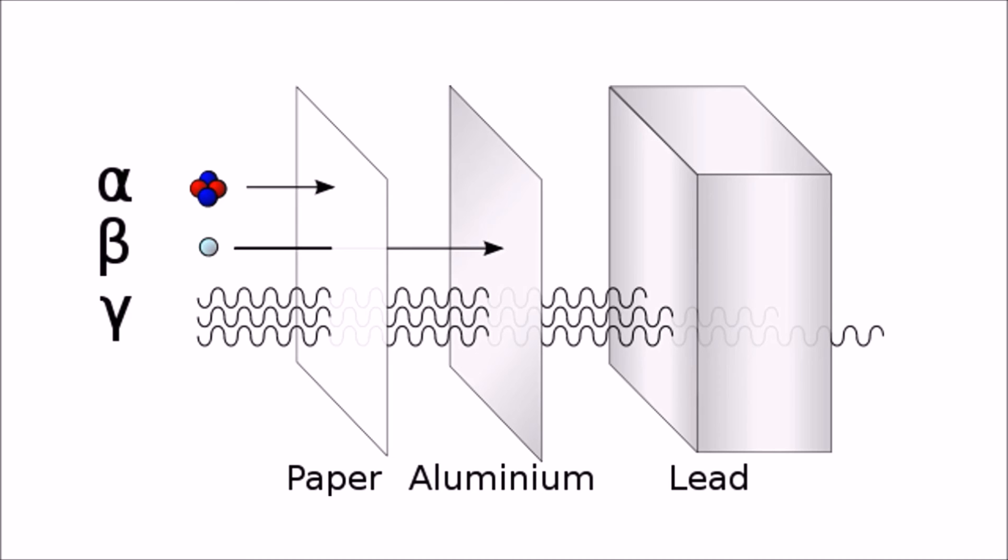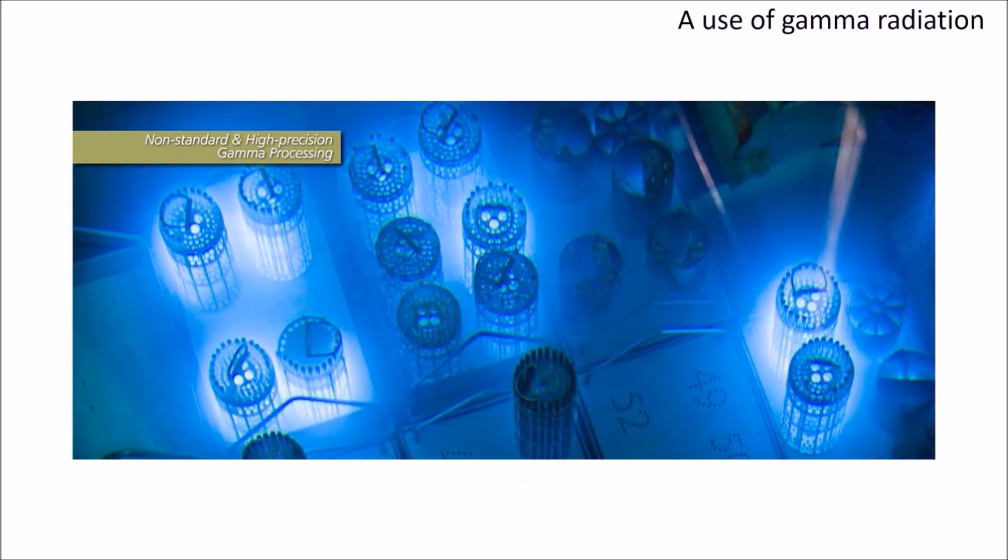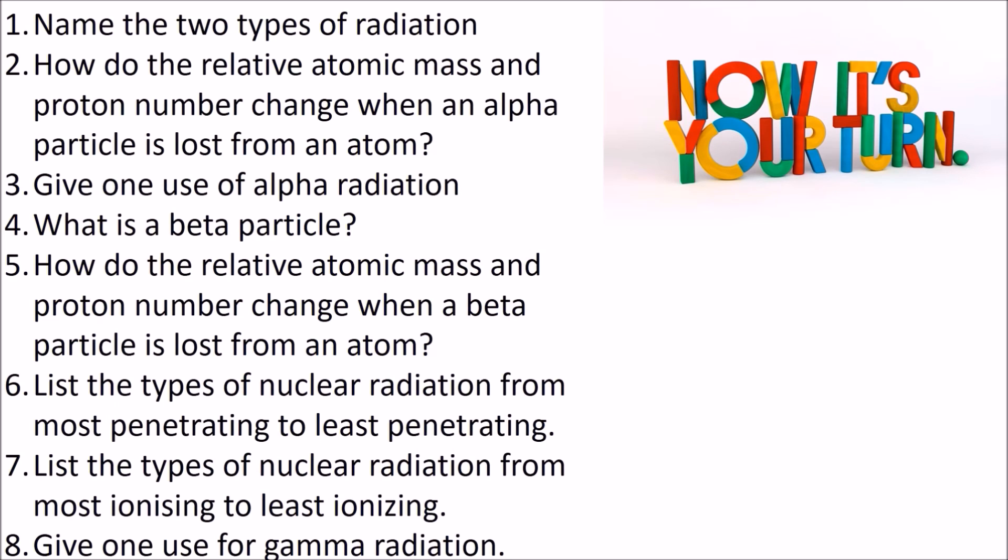Gamma is the most penetrating of them all. It takes thick lead or thick concrete to stop it. However, it is the least ionizing of the nuclear radiations. Compared to other EM waves, compared to infrared and the other waves, it is very ionizing. But as I say, not compared to alpha and beta. It's the least ionizing of the three. One use of gamma radiation is in sterilization, so we can sterilize surgical equipment or even our own food with a blast of gamma rays. We know that there'll be no bacteria or fungus causing a decay and causing all that nasty food spoilage, so we can use it for sterilization.